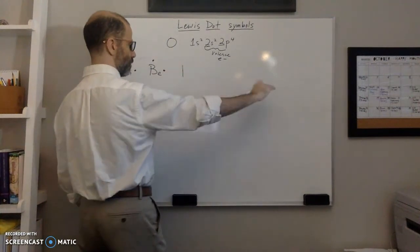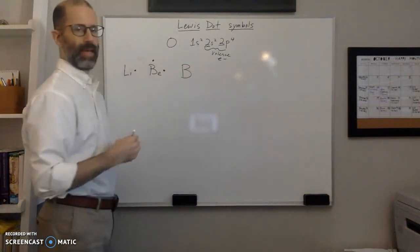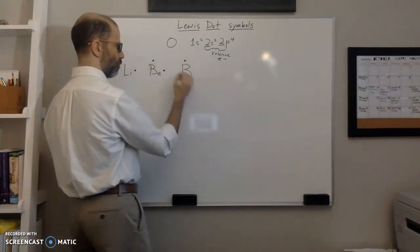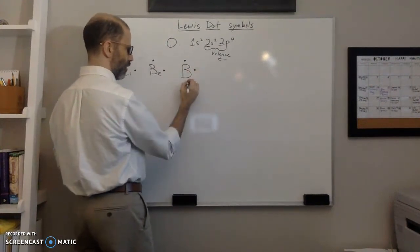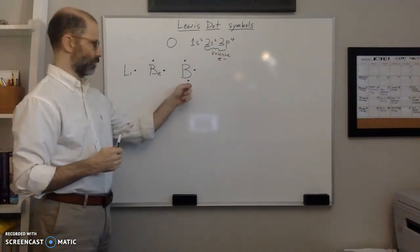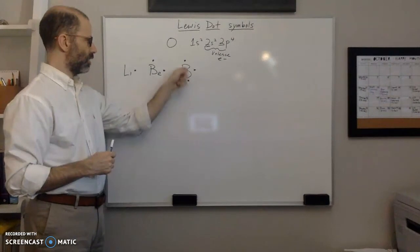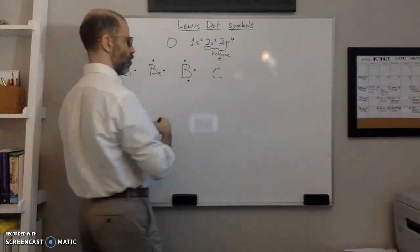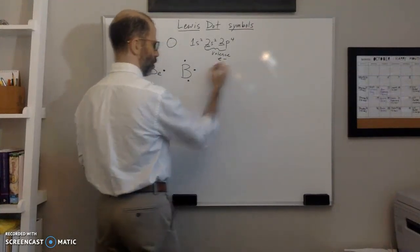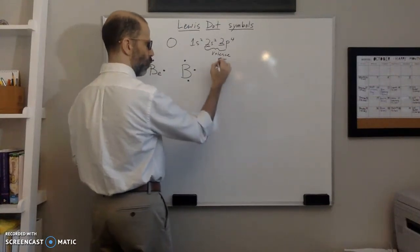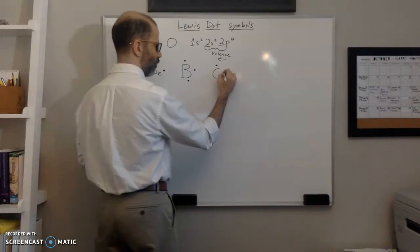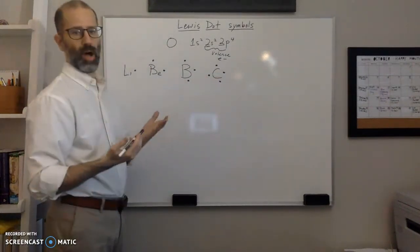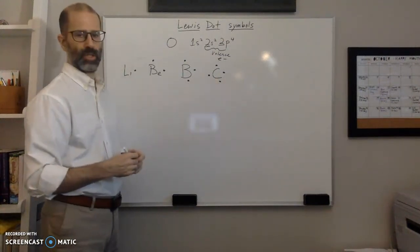Boron has three valence electrons, so we have three dots. Starting on top and working clockwise, one dot on top, one on the right, one on the bottom — three unpaired electrons. Carbon has four valence electrons. Starting on top and going clockwise: one on top, one on the right, one on the bottom, one on the left — all four valence electrons placed, one on each side. That's the Lewis dot structure for carbon.